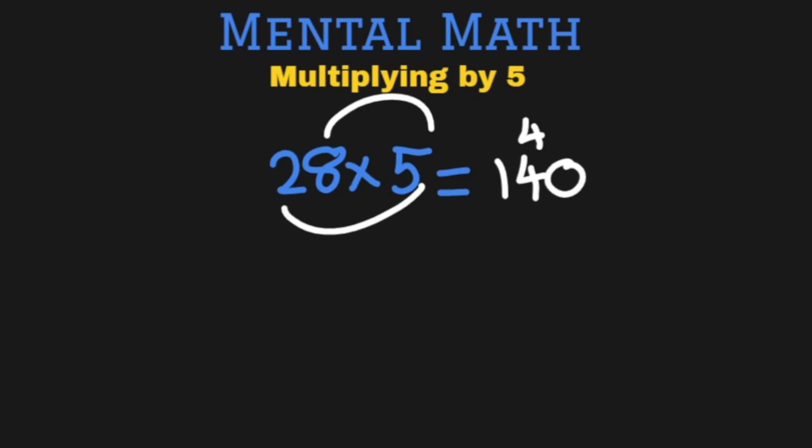So 28 multiplied by 5 is 140 but I can do it even faster than this by using my trick. And what is the trick? It has two short steps. Very simple and very easy.